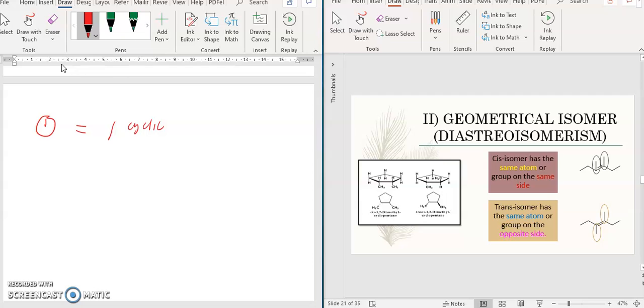Cyclic structure doesn't matter how it's closed, like I drew earlier. For example, cyclopentene, cyclopropane, cyclobutane, any cyclic structure. It needs to have a double bond or be cyclic.